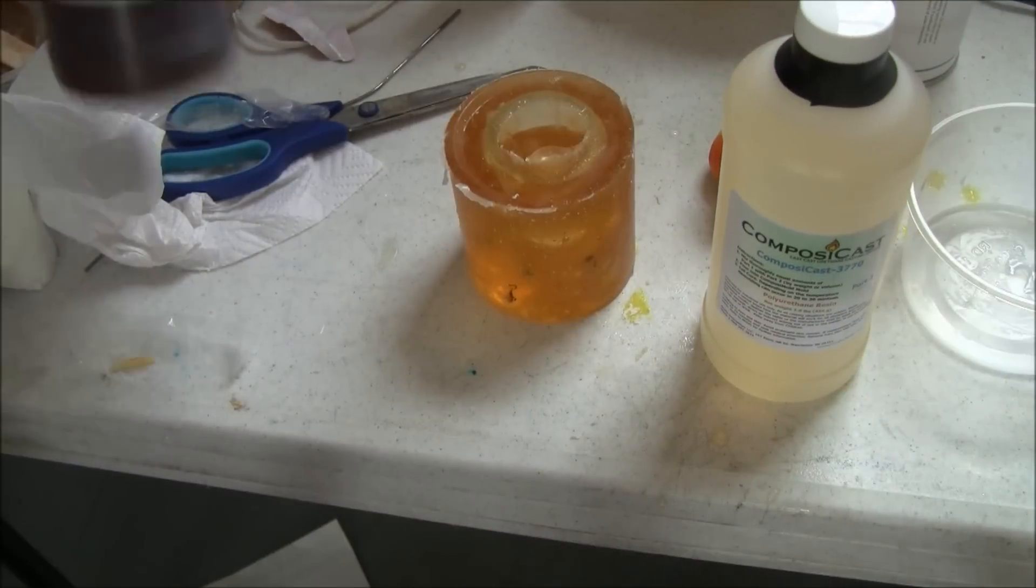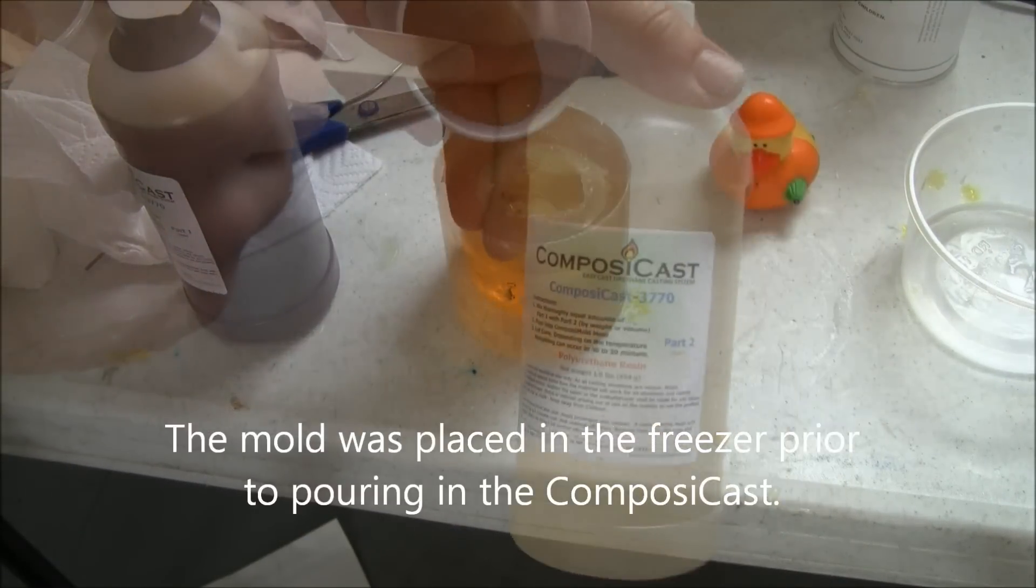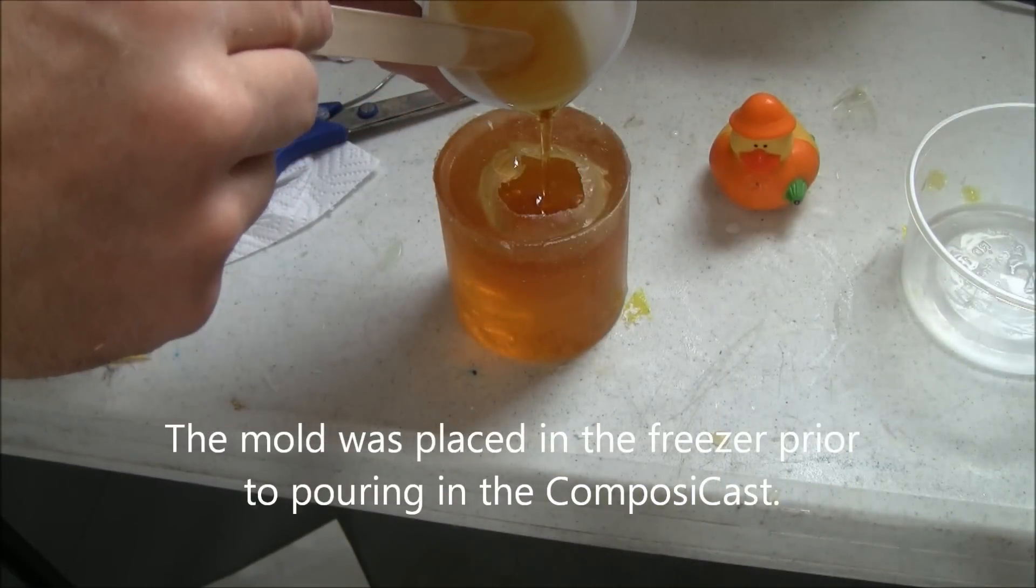Here we also show the plastic duck being made with ComposiCast urethane resin. It works the same way. Be sure to keep the mold cool if necessary throughout the process.